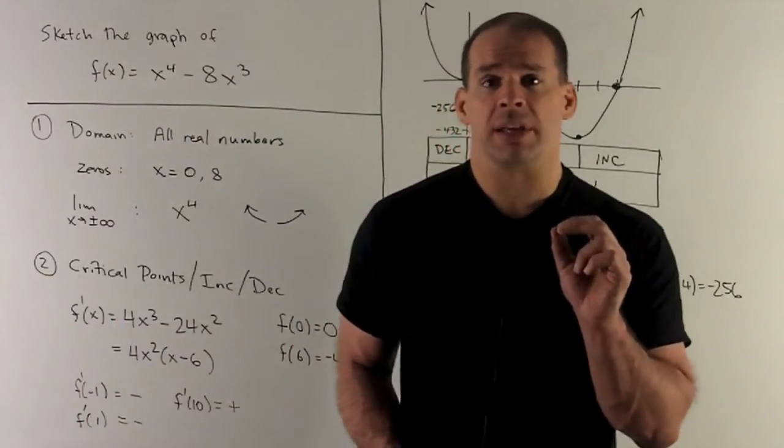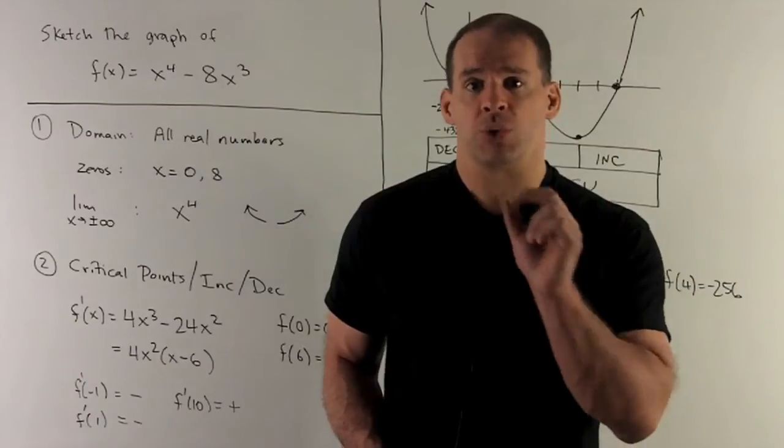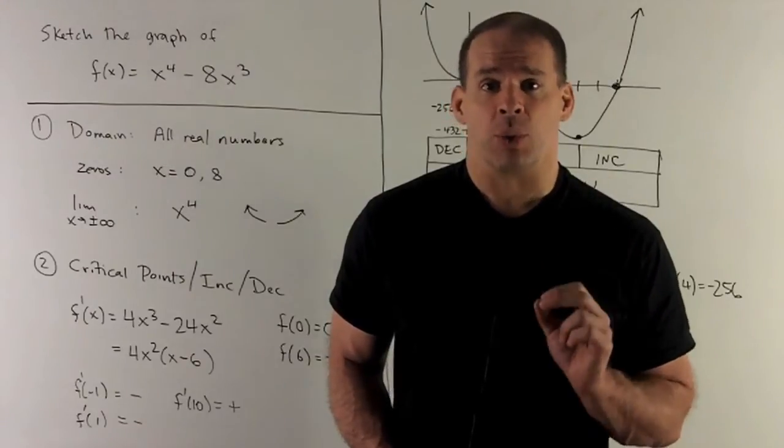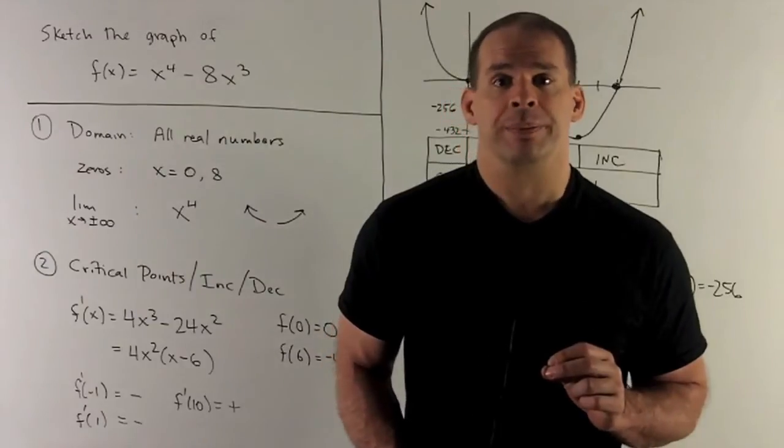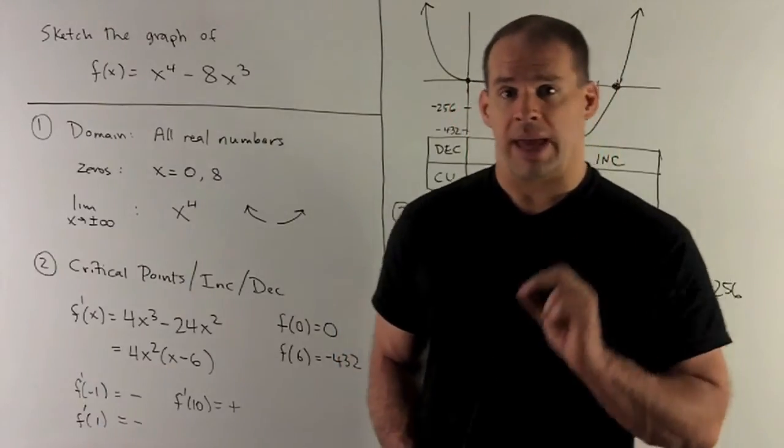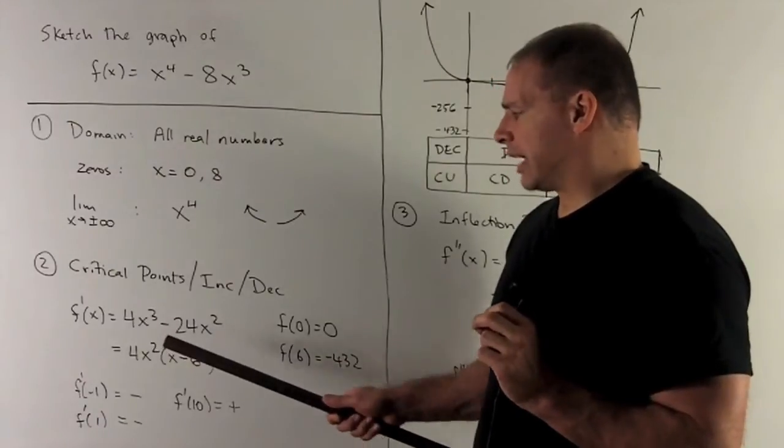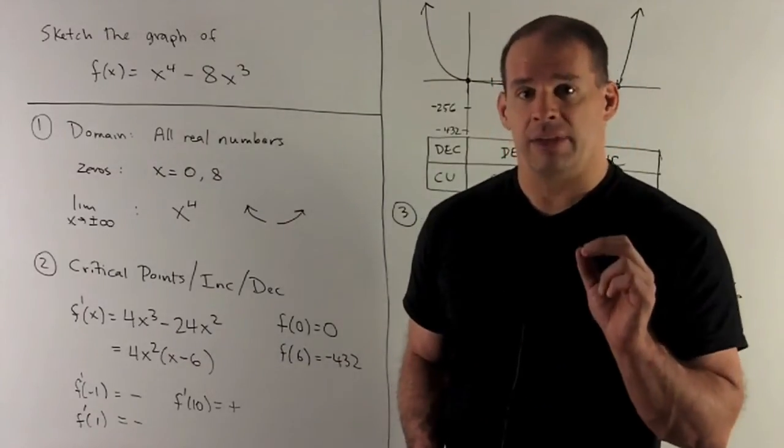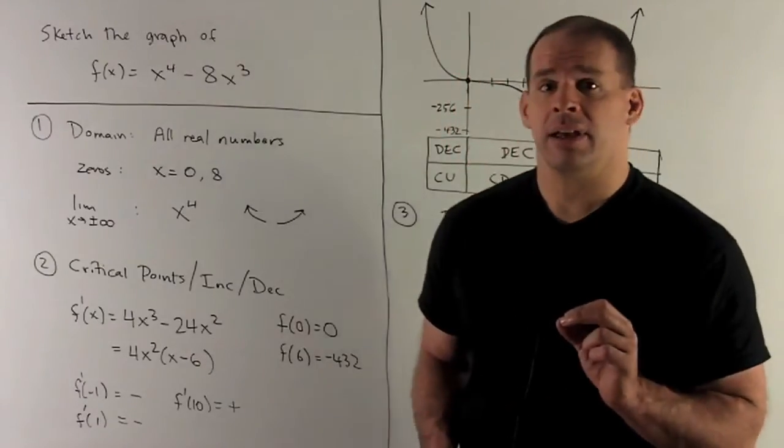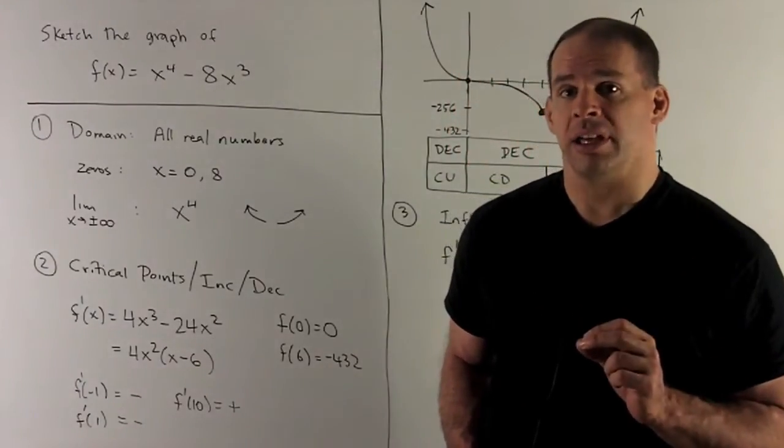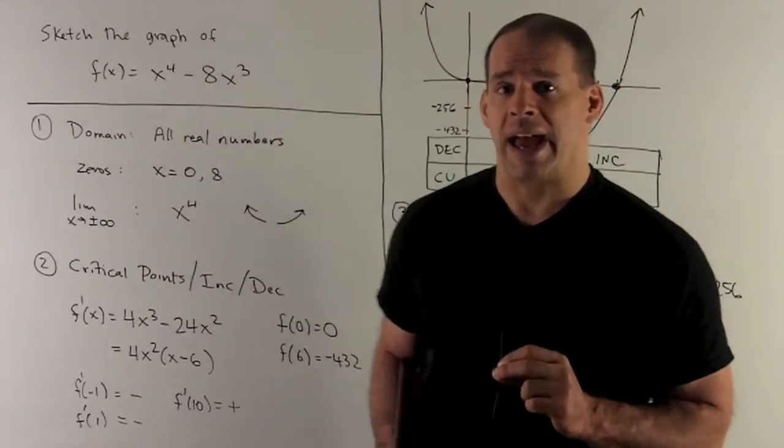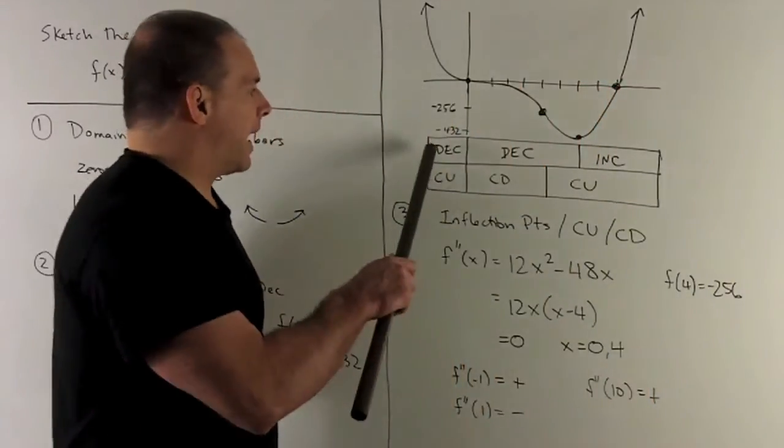If I want to know the regions of increasing and decreasing, we're going to check a point in each region. We'll apply the first derivative, and the sign that comes out on each point determines whether the region is increasing or decreasing. The points we're going to check: -1, 1, and 10. At -1, we'll have 4 times 1 times -7, that's negative, so our first region is decreasing. If I put 1 in here, I have 4 times 1 times -5, and again, our middle region is decreasing. If I put 10 in, I have 4 times 100 times 4, that's positive, so we're going to have increasing on our last region. I'll fill in my boxes as so.